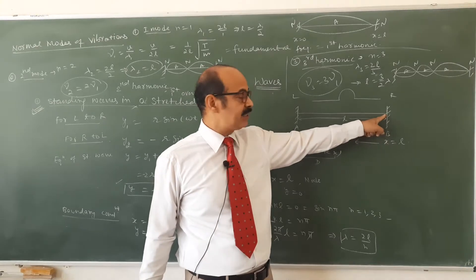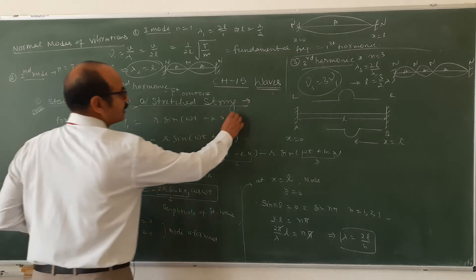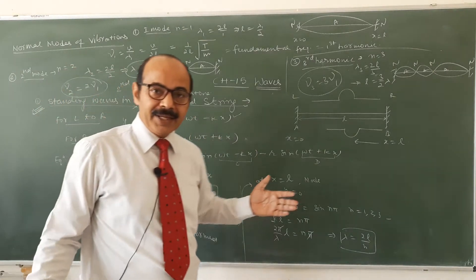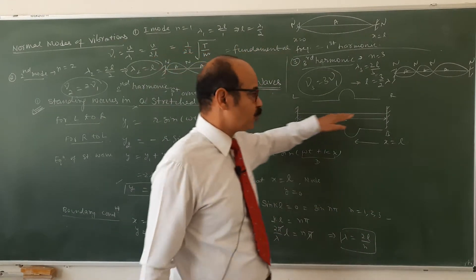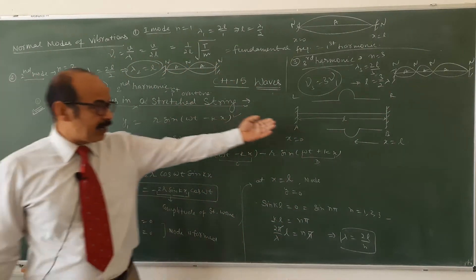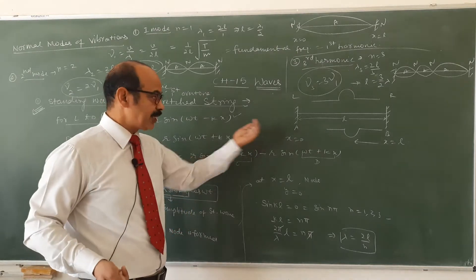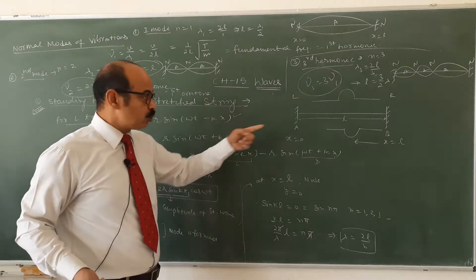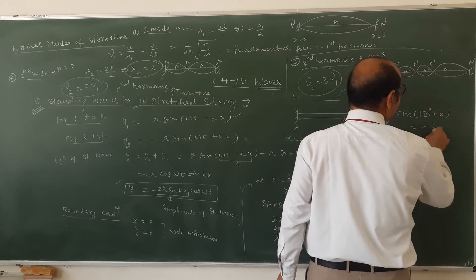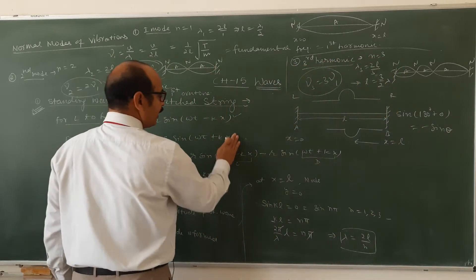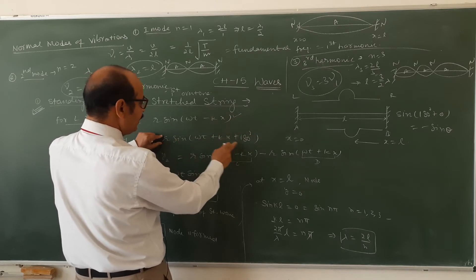अब चूंकि reflection closed boundary से हो रहा है, तो यह opposite phase में reflect होएगी. तो left to right के लिए equation: y = r sin(ωt − kx). यह wave right की तरफ, along positive x-axis travel कर रही है. जब right end से opposite phase में reflect होके आएगी, तो direction negative x-axis की तरफ हो गई, और phase opposite हो गया — phase difference 180 degree का. So sin(180° + θ) = −sin θ. तो reflected wave का equation: y = −r sin(ωt + kx).